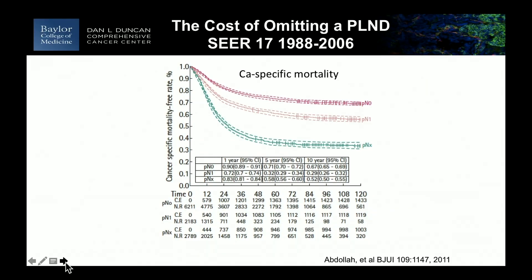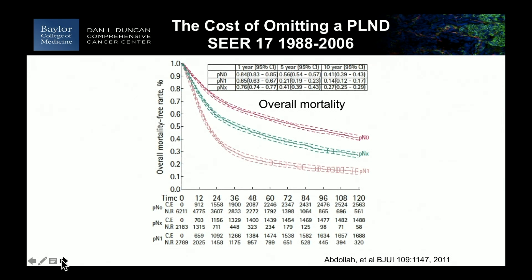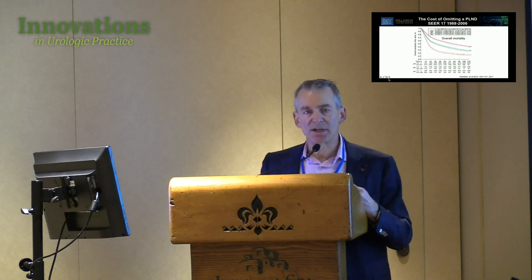Historically, before pelvic lymph node dissections were routinely included in radical cystectomy, local recurrence rates were in the range of 40 to 50%. There's very clear evidence that a thorough pelvic node dissection has a significant impact on local pelvic recurrence. There is also a cost of omitting a lymph node dissection — this is SEER data. PNX, meaning no lymph nodes in the specimen, is a surrogate for less-than-optimal radical cystectomy, and outcomes are much worse than either pathologically node-negative or PN1 disease.